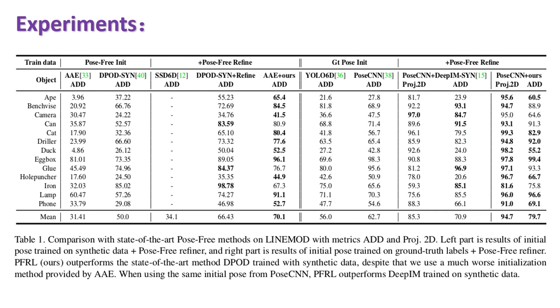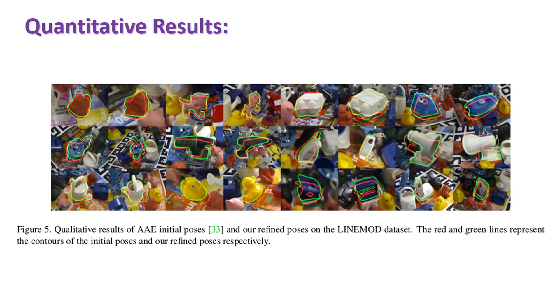On the linemod and T-LESS datasets, we achieve state-of-the-art performance compared to methods without using real-world ground truth 6D pose labels. Here are some results on the linemod dataset.